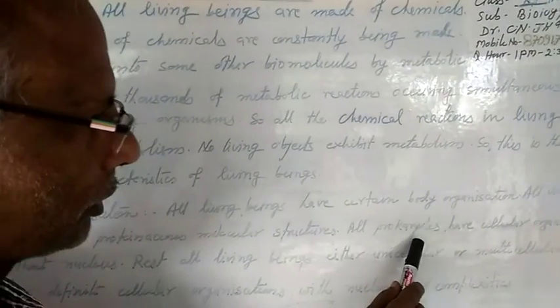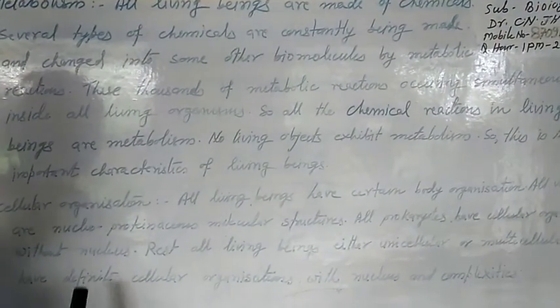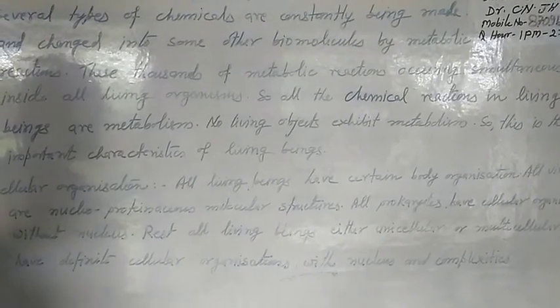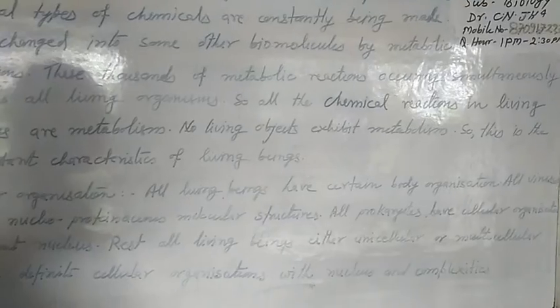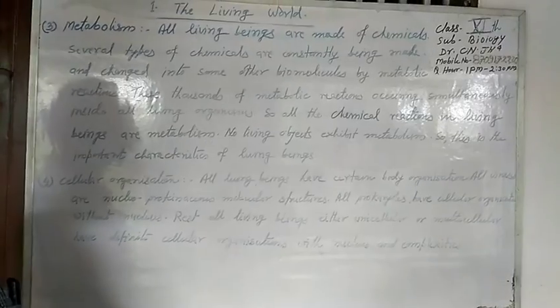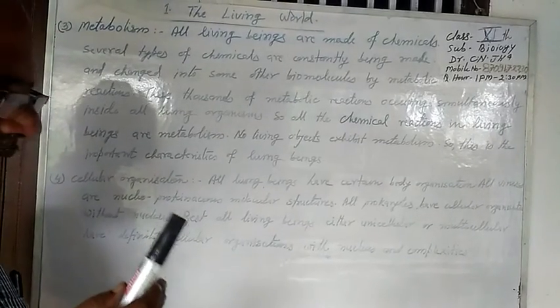All prokaryotes have cellular organization, but they have no nucleus and have a very simple body structure — mostly they are unicellular. All other living beings, either unicellular or multicellular, have definite cellular organization with a nucleus and greater complexity. They show much complexity in body structure, forming cellular level, tissue level, organ level, and organ system level.